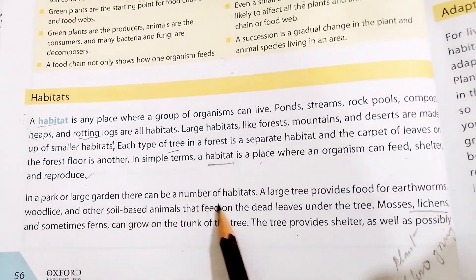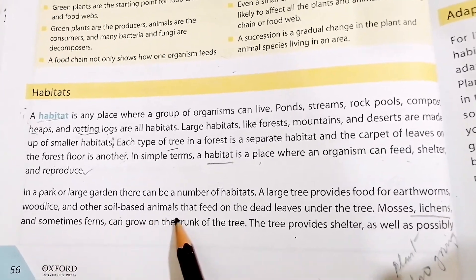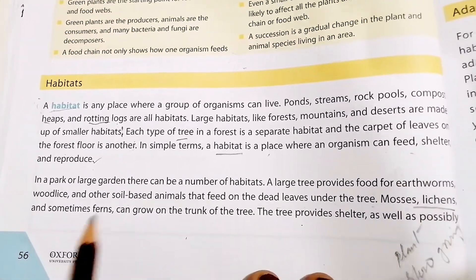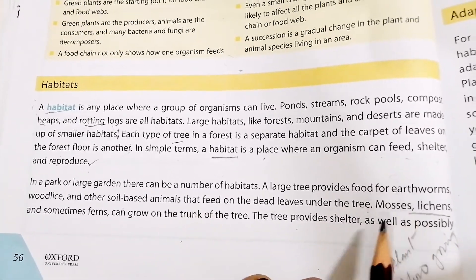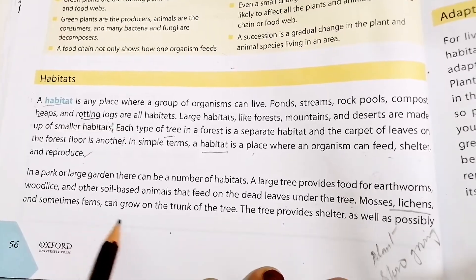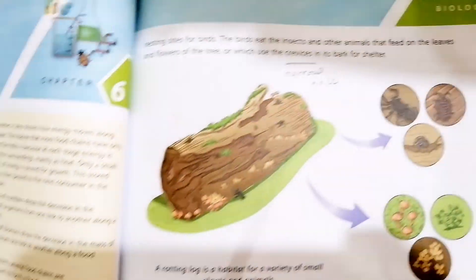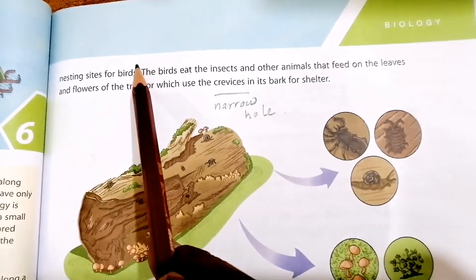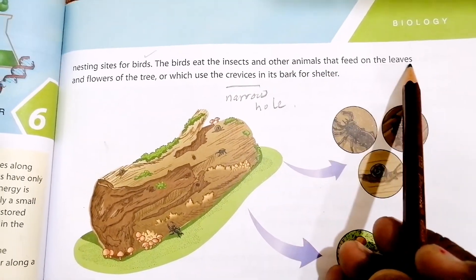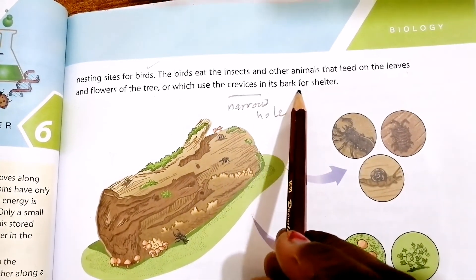In a park or large garden there can be a number of habitats. A large tree provides food for earthworms, woodlice, and other soil-based animals that feed on the dead leaves under the tree. Every living organism depends upon another for food. Mosses, lichens, and sometimes ferns can grow on the trunk of the tree, and the tree provides shelter as well as possibly nesting sites for birds. Birds eat the insects and other animals that feed on the leaves and flowers of the tree.